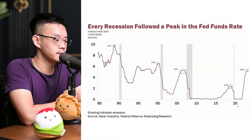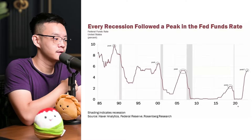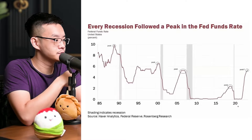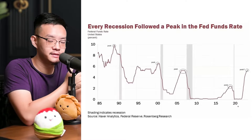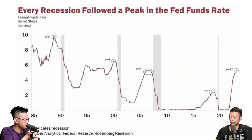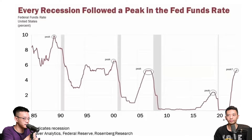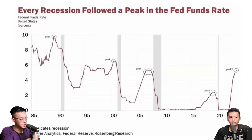The theory is that when the market is overheated, the US federal funds rate will drop. But what we see is a little different. What happens is it hits the peak, then the Fed starts to drop it, and then a few months or even years later, a recession follows.